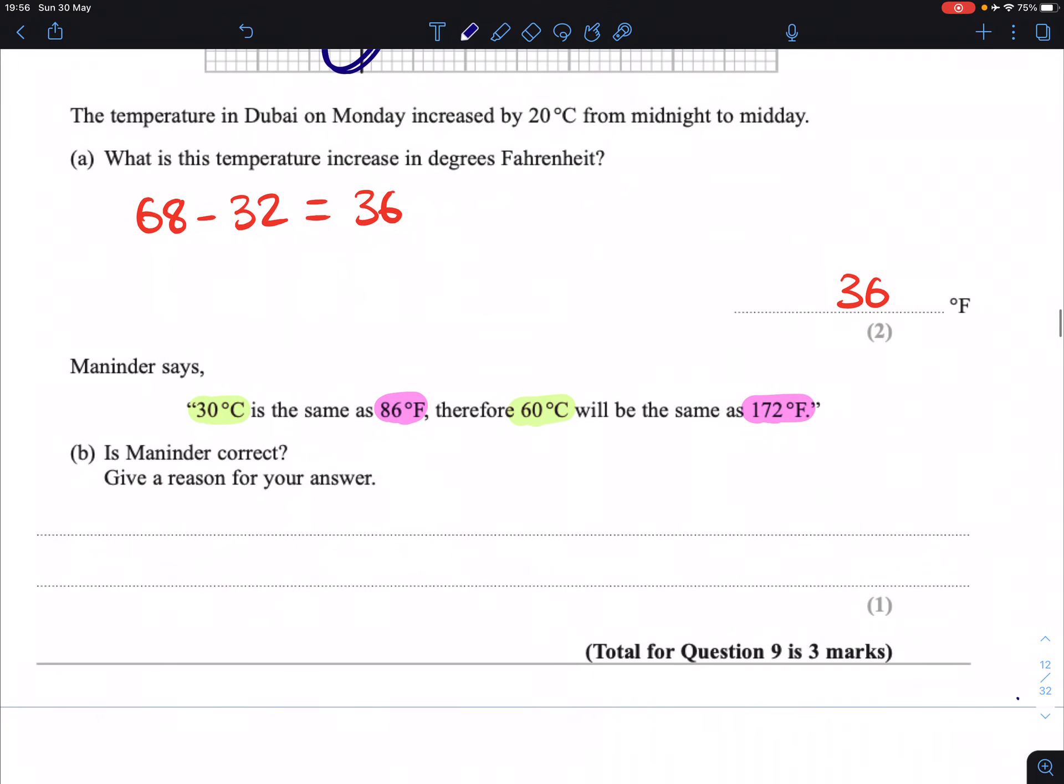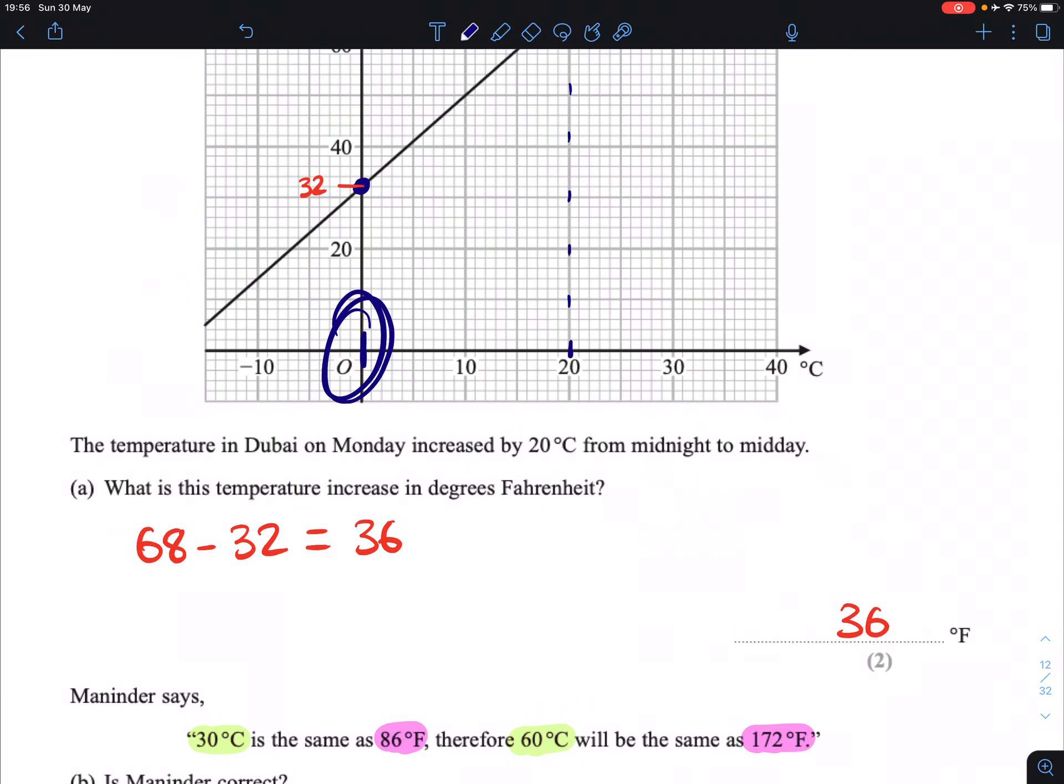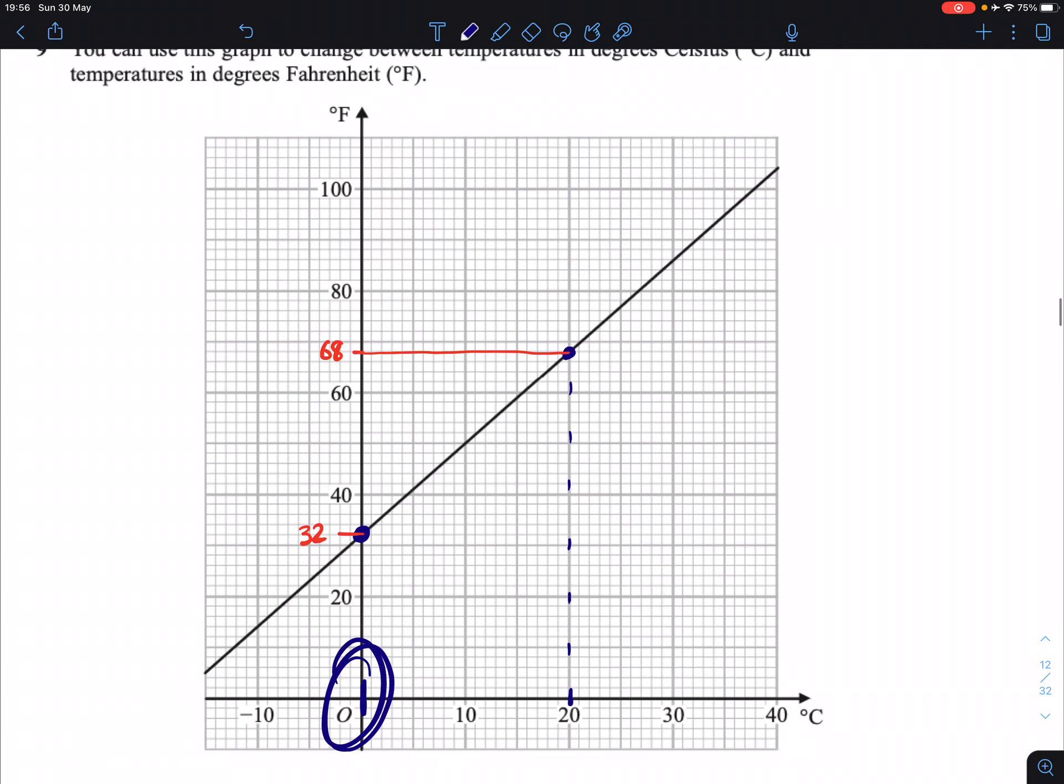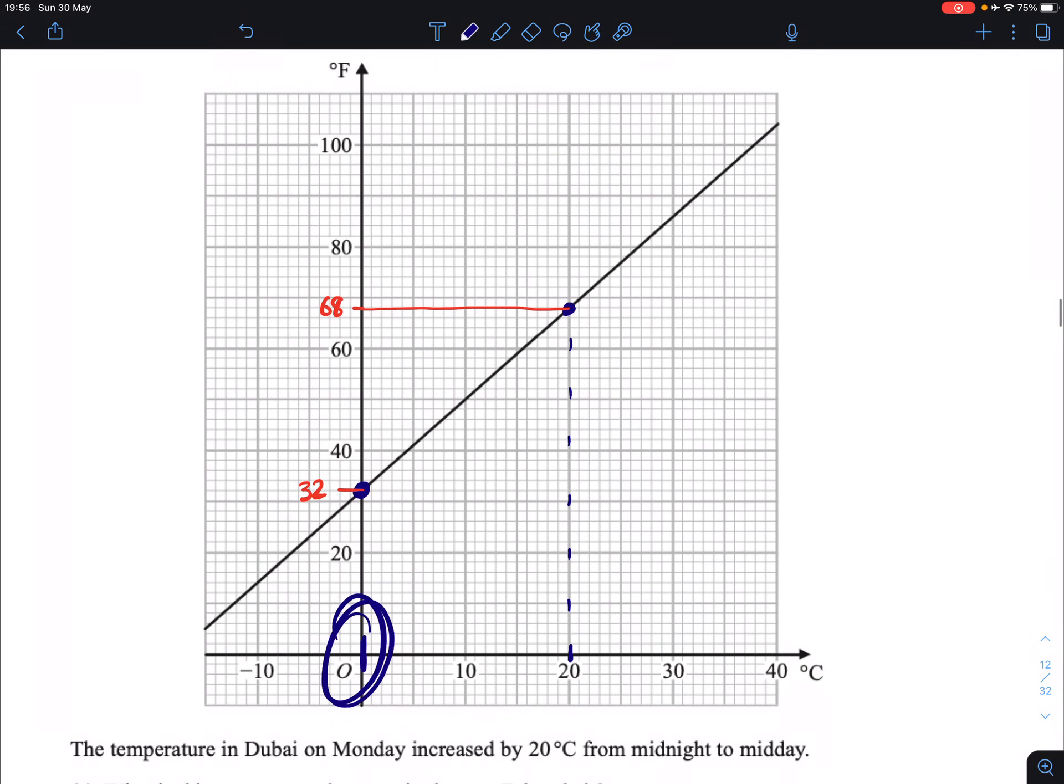Now, we can also show this another way. Look at this difference that we just got in the first part. 36 degrees Fahrenheit was this 20 degrees Celsius increase. So we started at 32, and by going 20 up in Celsius, we went up 36 in Fahrenheit.